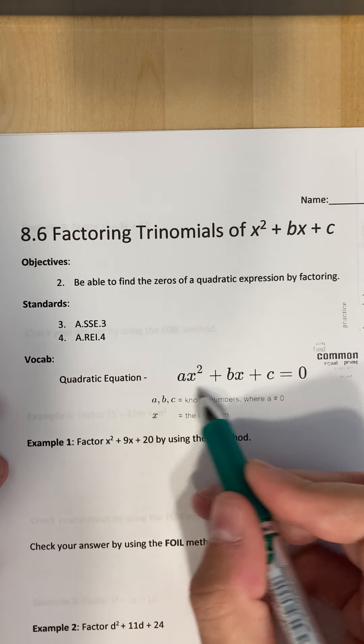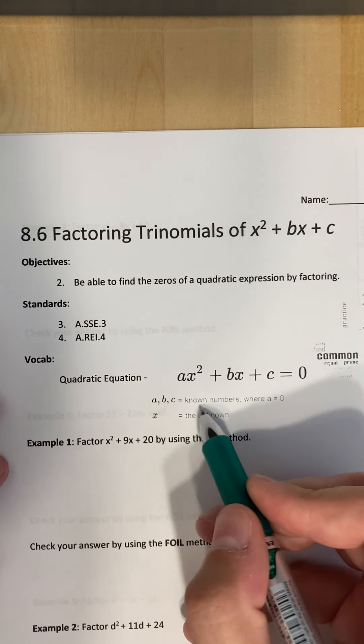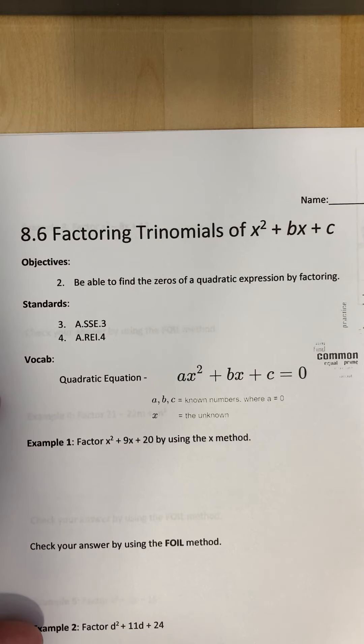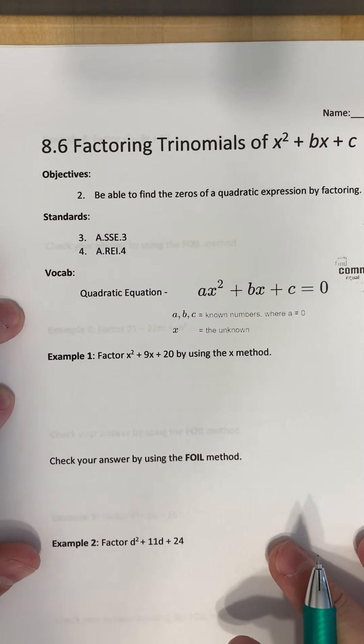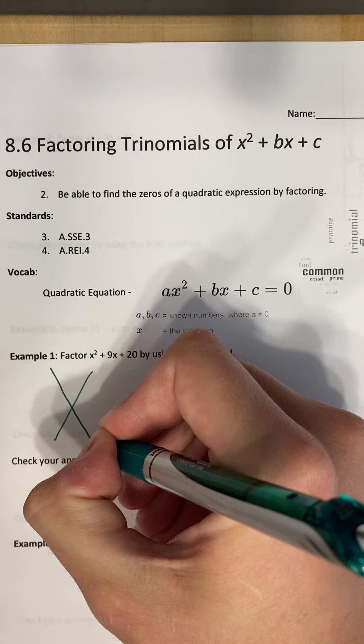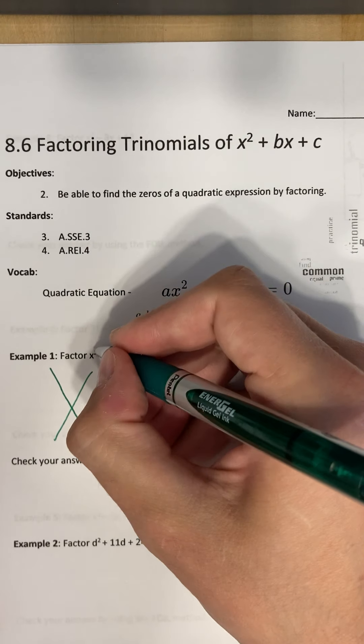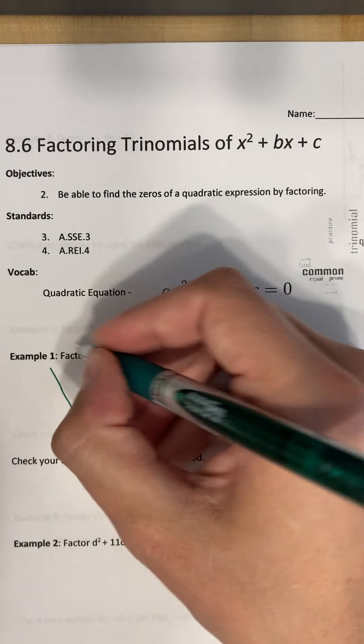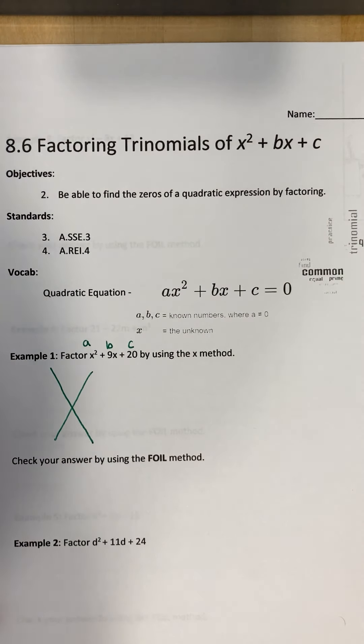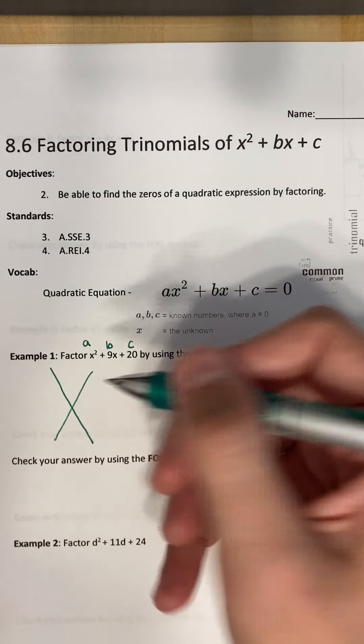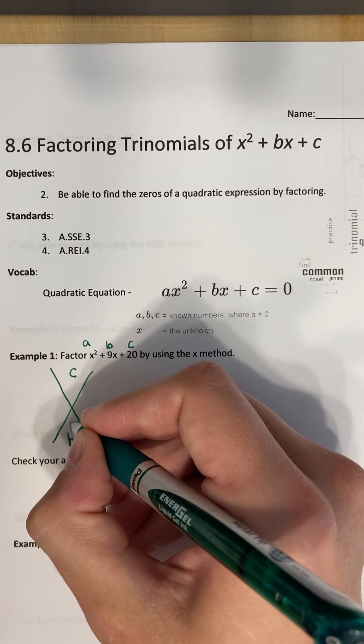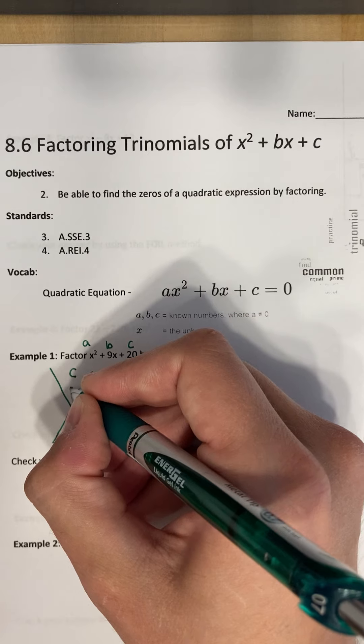So the quadratic equation is right here. So we've been working with where a, b, and c are known numbers. A cannot be zero, and x is the unknown. So we're going to use something called the x method to factor these. So what I mean by that is we're going to draw an x on our paper. And then we know that this is b, this is c, and there is a one out in front of here that's a, but we're not going to use it for this video. But we are going to say that we're going to put c right here, and we're going to put b at the bottom. And then we're going to put a little plus sign here and a multiplication sign.